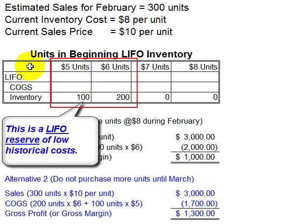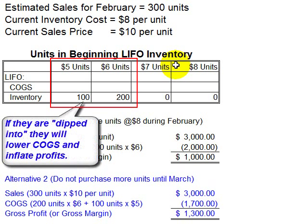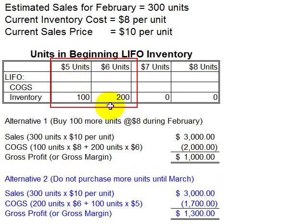By using LIFO, a pool of units is formed in inventory that all carry costs from long ago, and if prices have been rising, these costs will be much lower than current market values. An unscrupulous manager can distort cost of goods sold and inflate gross profit simply by not restocking inventory. This creates the opportunity for management to liquidate the LIFO reserve of lower historical costs, inflating the reported income figure for the current period.